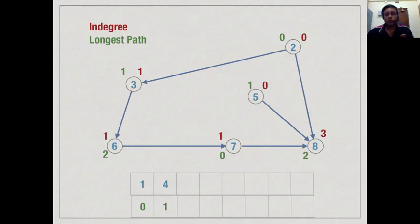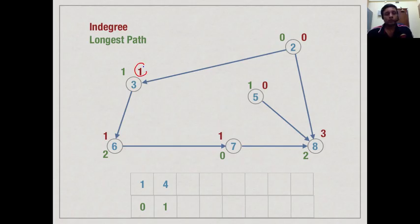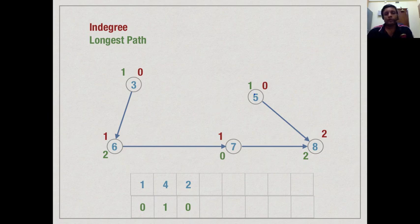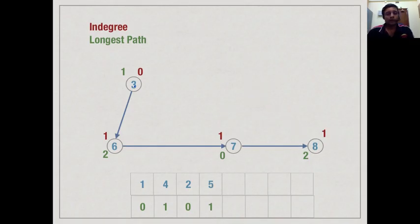When we enumerate vertex 2, it would say the longest path to 3 is at least 1, but it is already 1, so no change. It would say the longest path to 8 is at least 1, but we know it is at least 2, so again no change. When we delete a node, we take the current longest path of the deleted node plus 1 and compare it with what is already known, keeping the maximum. When we remove vertex 5, the in-degree of 8 becomes 2, but 1 plus 1 equals 2, which is already known, so no change. When we process vertex 3, it says the longest path to 6 is at least 2, but we already know that, so again no change.